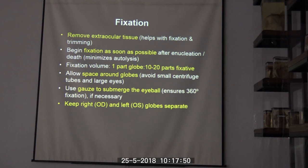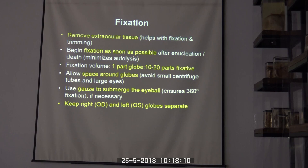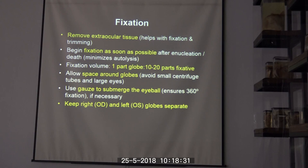Once you have the globe and have hopefully removed surrounding tissues for intraocular disease, the next step is fixation, which should happen as soon as possible. I have been part of research projects where the globe was collected right after euthanasia and ophthalmologists were very conscious about getting the sample into fixative quickly. The longer you wait, the more likely you have changes — particularly in the retina — that make it hard to distinguish real findings from initial autolysis.